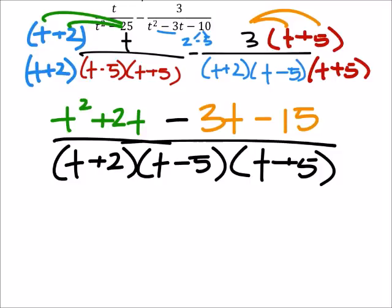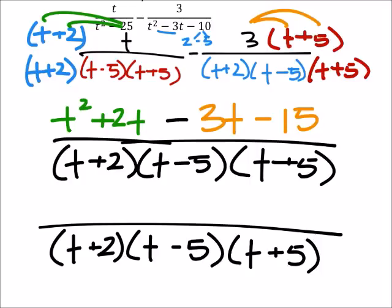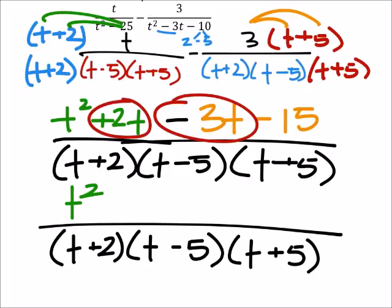Right here we're just looking to combine like terms. There's nothing to combine in the denominator, by the way. There were no other t squares to combine. But I can combine this 2t with this minus 3t, giving me a negative 1t. And then that minus 15 also had no other like terms.